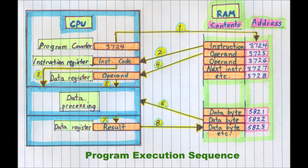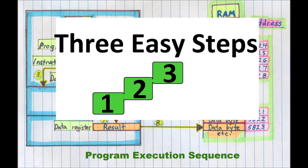The following is an example of the program execution cycle. Supposing the program's code is stored in RAM, the program execution cycle can be understood in three easy steps. I will explain.